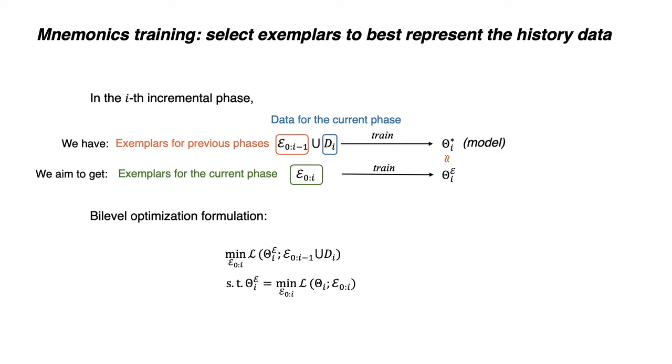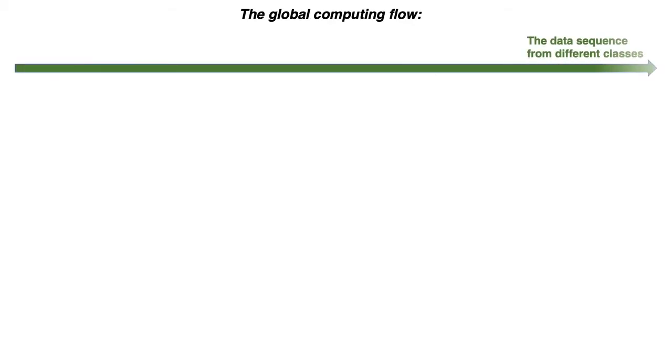We propose to formulate this as a bilevel optimization problem. For the global training flow, we alternate the learning of our mnemonics exemplars and the classification models.